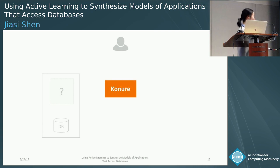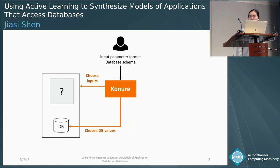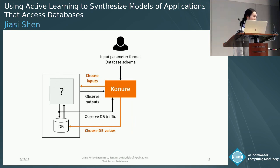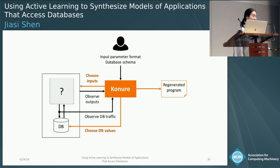Our tool is called Conyre. It is named after a kind of parrot. Before we start, we take the input parameter format and the database schema from the user. With that information, we populate the database with chosen values and run the program with chosen inputs. When the program runs, we use a transparent proxy outside of the database to intercept the traffic. After the program terminates, we also collect the outputs. We repeat this interaction multiple times, and eventually we infer the program and regenerate a new one that does the same thing.